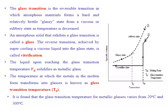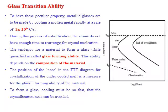The glass transition temperature for particular metallic glasses may vary between 20°C and 300°C. To achieve metallic glasses with their peculiar properties, the molten metal is cooled rapidly at a rate of more than 2×10⁶ °C per second. During solidification, atoms do not have enough time to rearrange for crystalline nucleation. This tendency for a material to form a glass while quenching is called glass forming ability.